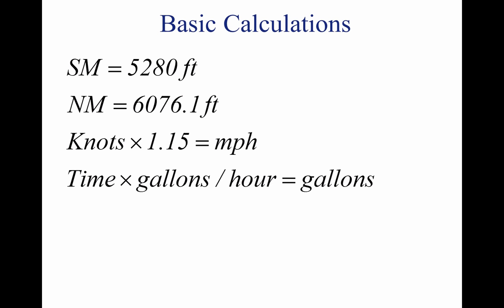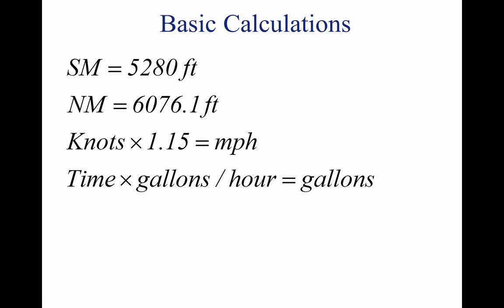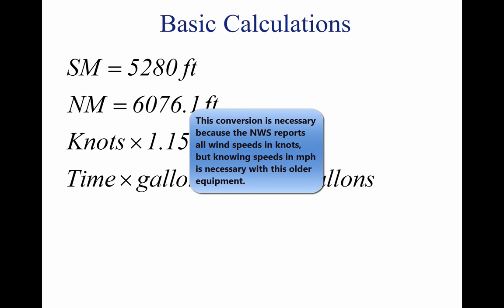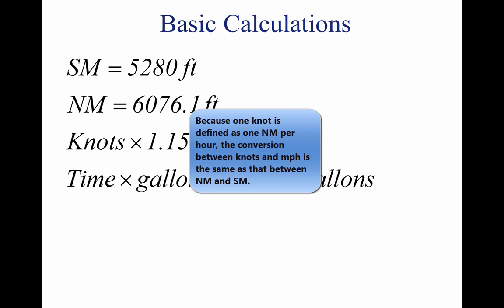Converting knots to miles per hour. Another conversion is that of changing knots to miles per hour. The aviation industry is using knots more frequently than mph, but it might be well to discuss the conversion for those that use mph when working with speed problems. The NWS reports both surface winds and winds aloft in knots. However, airspeed indicators in some aircraft are calibrated in miles per hour, although many are now calibrated in both. Pilots should learn to convert wind speeds reported in knots to miles per hour. A knot is 1 nautical mile per hour.